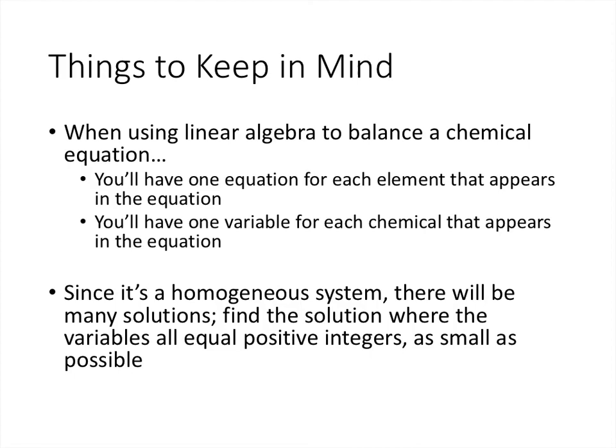So some things to keep in mind when you're using linear algebra to balance a chemical equation. You're going to have one equation for each element that appears in the equation. So if you have five different elements, you're going to have five equations, with each equation representing the number of atoms of that element on the left equaling the number of atoms of that element on the right. Then you'll have one variable for each chemical that appears in the equation. In other words, one variable for each coefficient that you're looking for. This will always give you a homogeneous system, so there will usually be many solutions. And what we're looking for is the solution where all of the variables are positive integers, and where those integers are as small as possible.